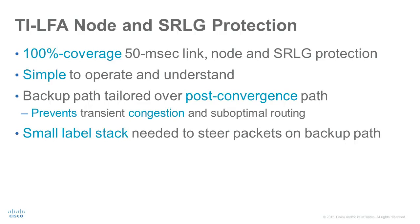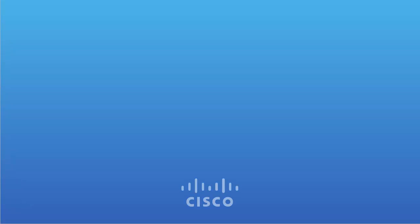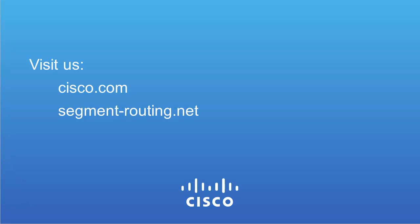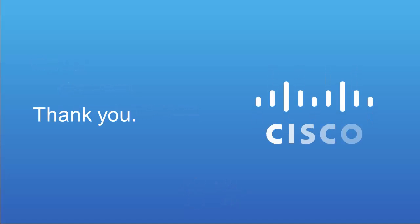In this demo we have seen how Topology Independent LFA provides protection against node failures. TI-LFA is simple to operate and understand — the IGP automatically calculates the backup path for each destination, a backup path tailored over the post-convergence path. We have seen that only a small label stack is needed to protect against link, node, and SRLG failures. Visit us for more Segment Routing information at cisco.com and segment-routing.net. Thank you for watching this video.